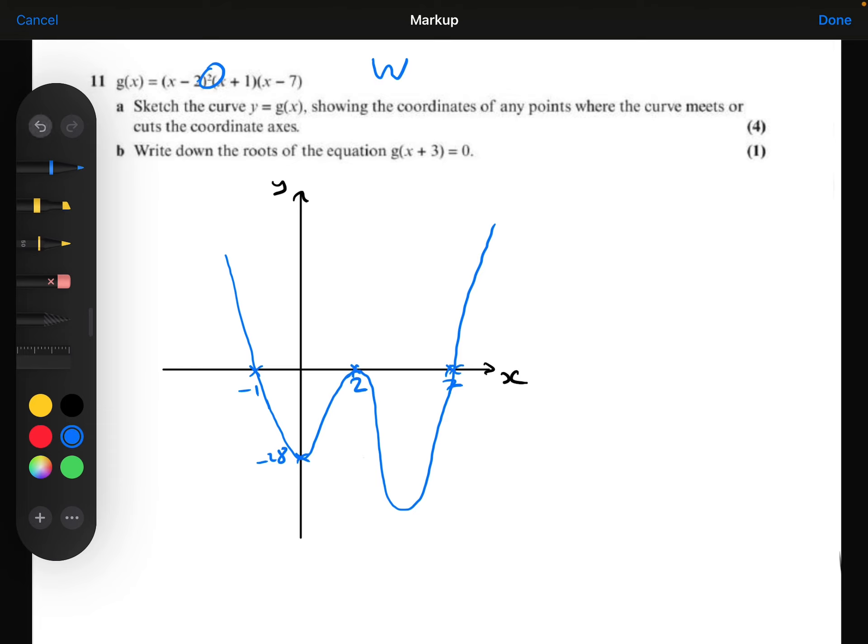I've drawn mine like that. If you drew yours slightly differently, you might have drawn yours maybe like this instead. That's fine for now if you've drawn it like that. We will, a little bit later on, figure out how to work out the exact coordinates of that point. So you could have drawn yours like that if you wished. But I'm doing mine like that. Both are fine for now. Right. We've sketched the curve. We've shown the coordinates where it meets the coordinate axes. So we're done. Part A.